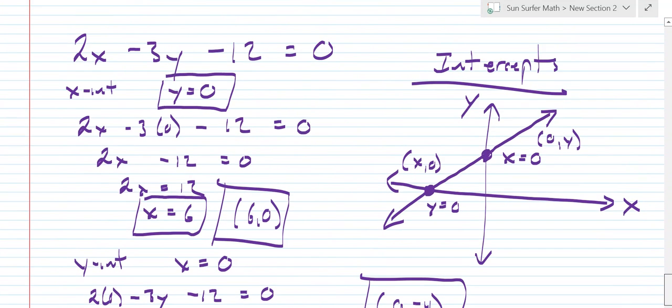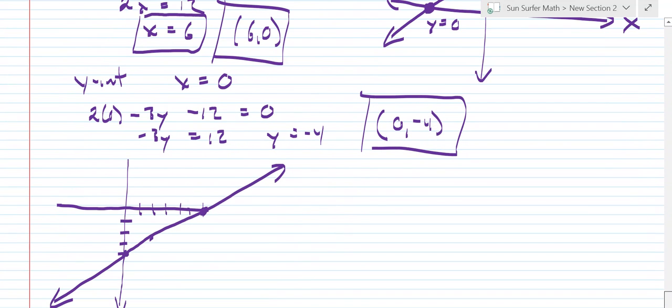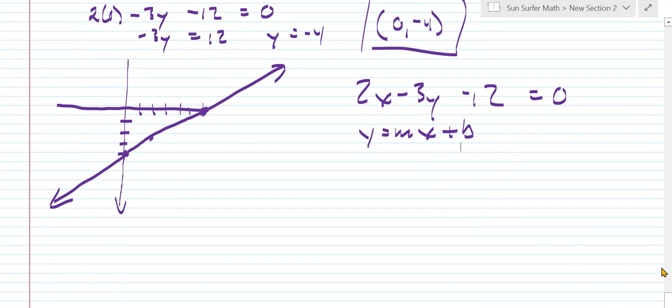The second way would be to take 2x minus 3y minus 12 and write it in slope intercept form. And you may want to go back and review the quick math video on linear equations. But the slope intercept form is the form y equals mx plus b. And so all we need to do is solve this for y. So minus 3y is going to be equal to negative 2x plus 12. And then dividing by negative 3.